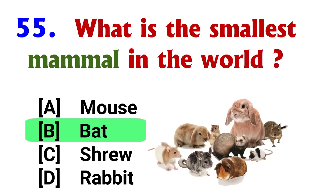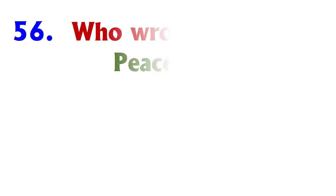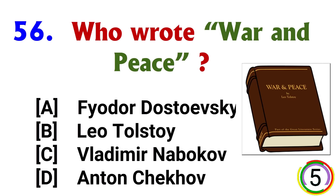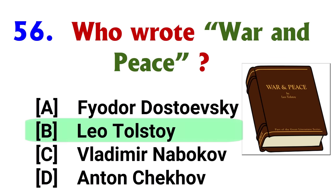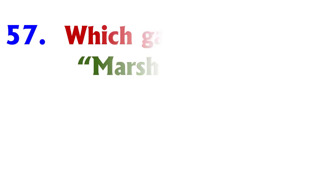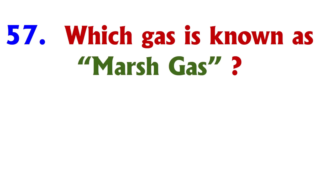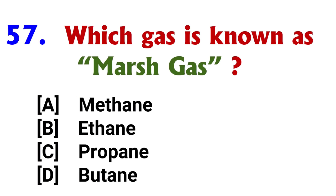What is the smallest mammal in the world? Answer: option B, Bat. Who wrote War and Peace? Answer: option C, Leo Tolstoy.